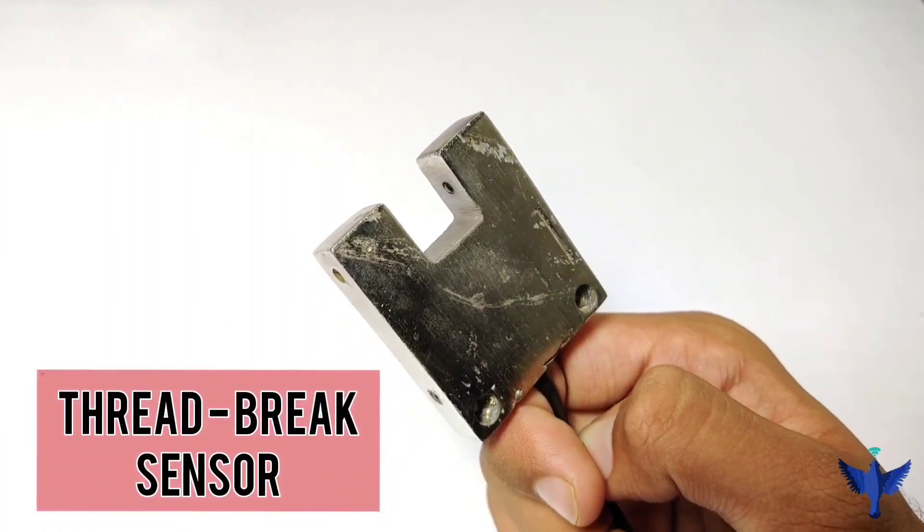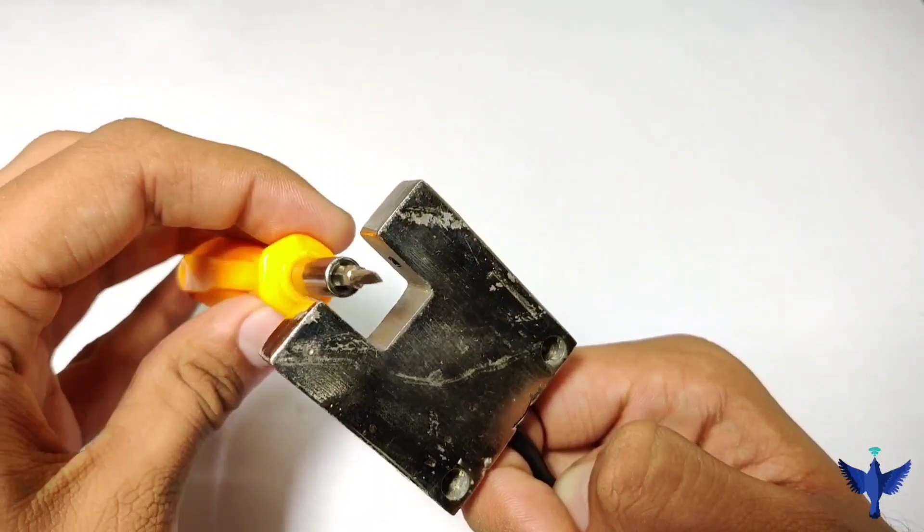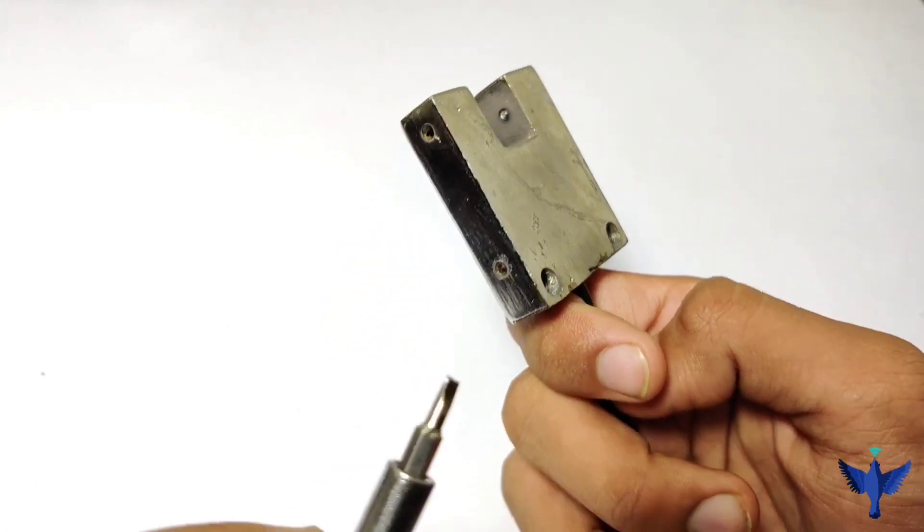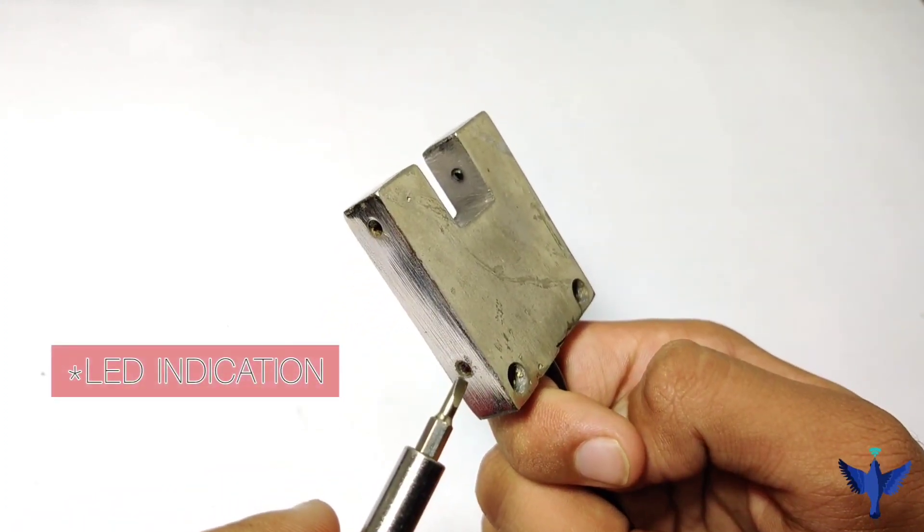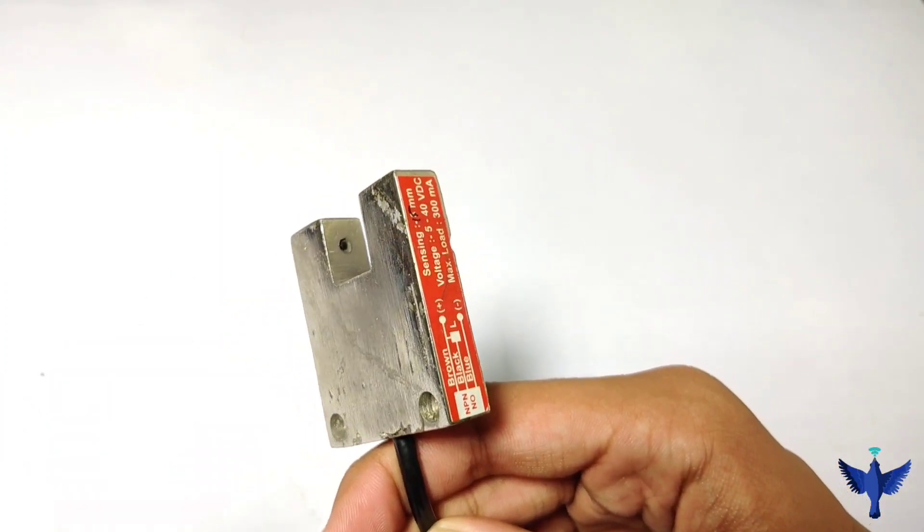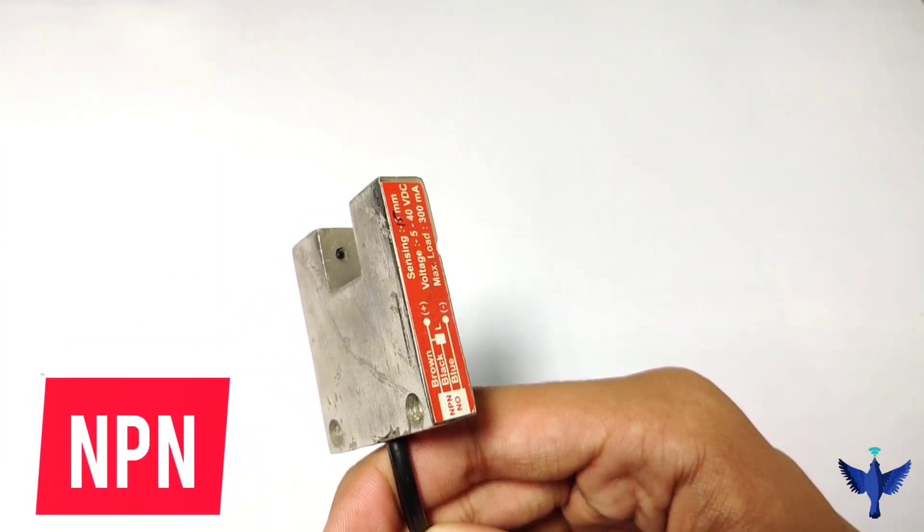This is my thread break sensor. You can see that from this area the thread will pass through and it will detect the break in my thread. Here is my LED indication. When the thread passes through, the LED indication will go on. This is my NPN type sensor, NPN NO, and I will do the connection accordingly.